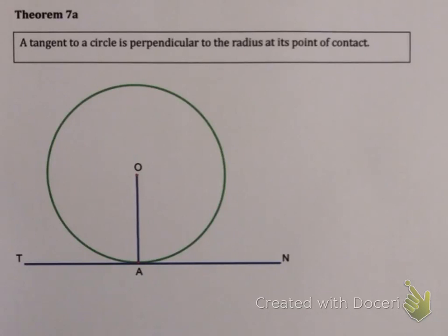Hi guys, now we're on to Theorem 7a and its Converse 7b. Just like Theorem 6, the proofs of these two theorems are not examinable, so we just have to know what they say.